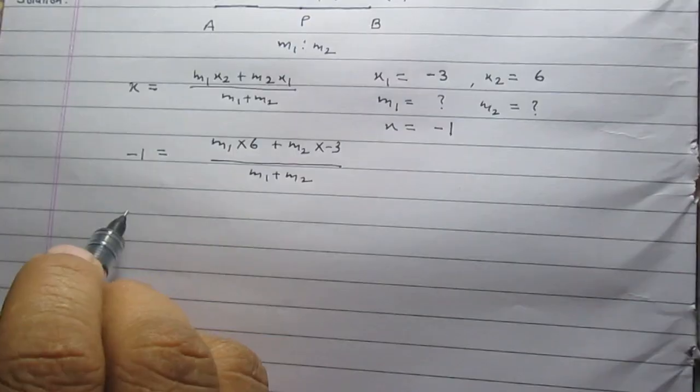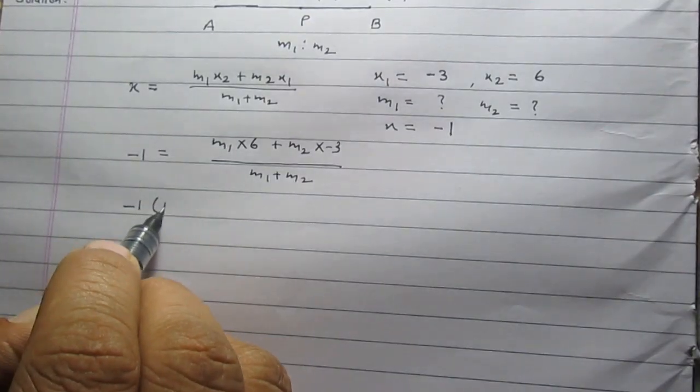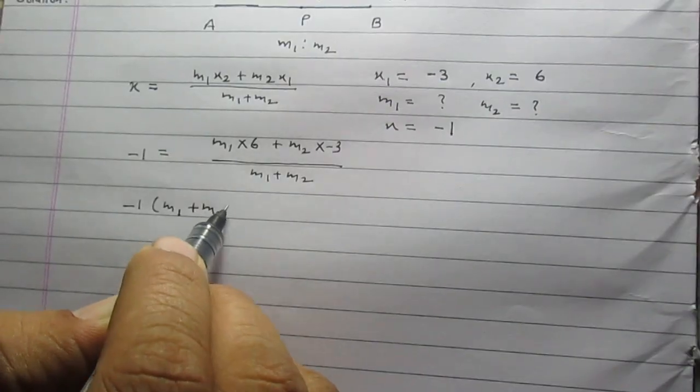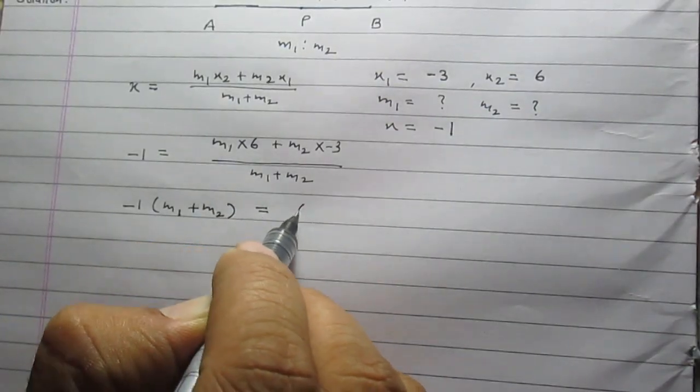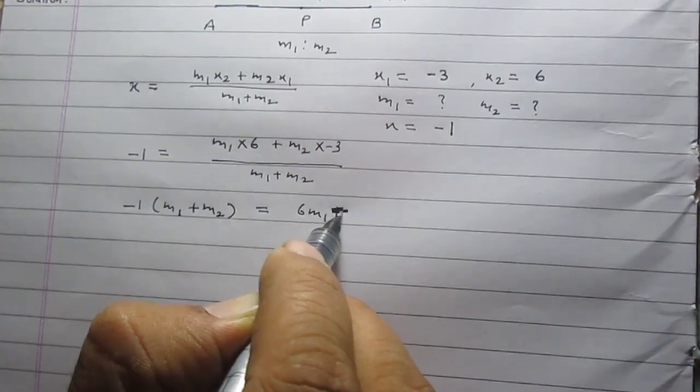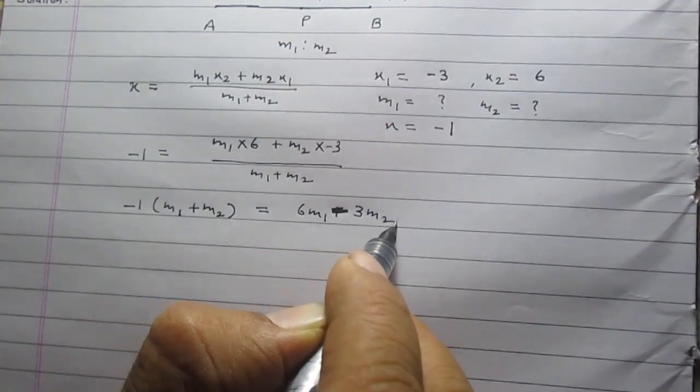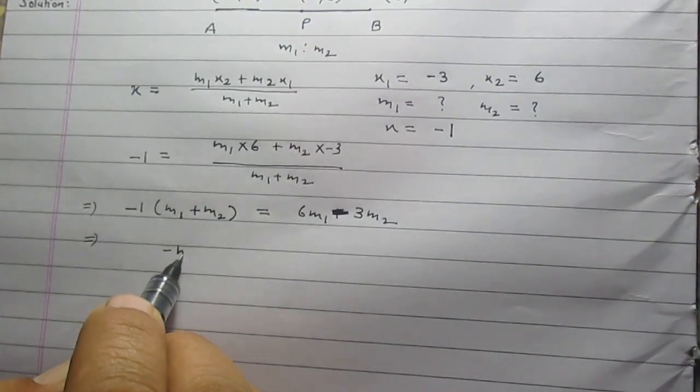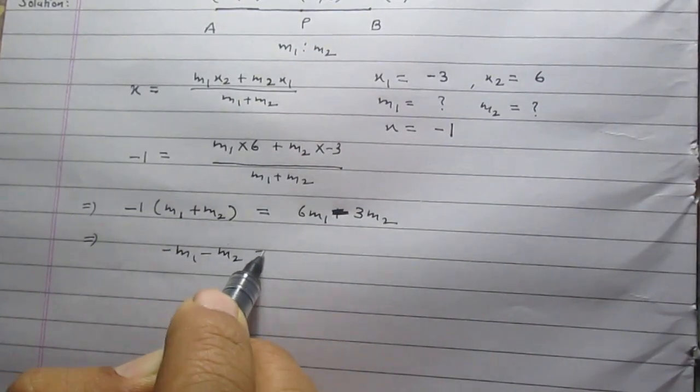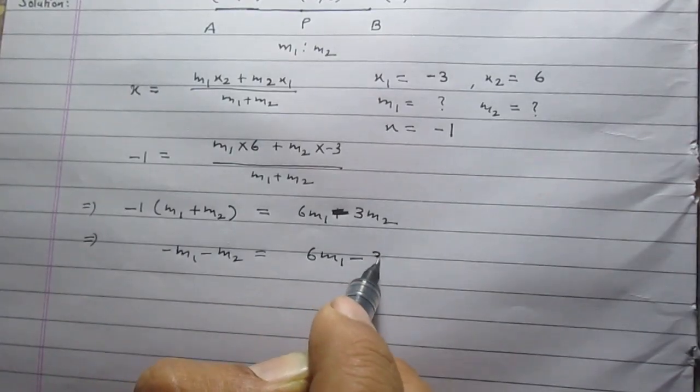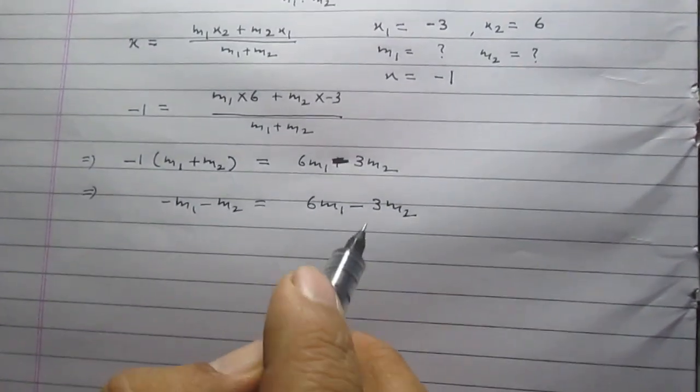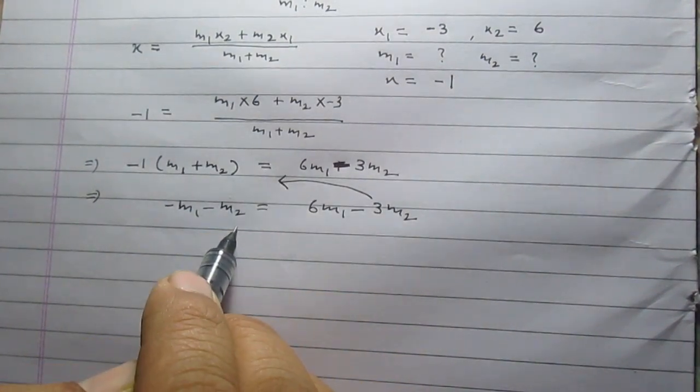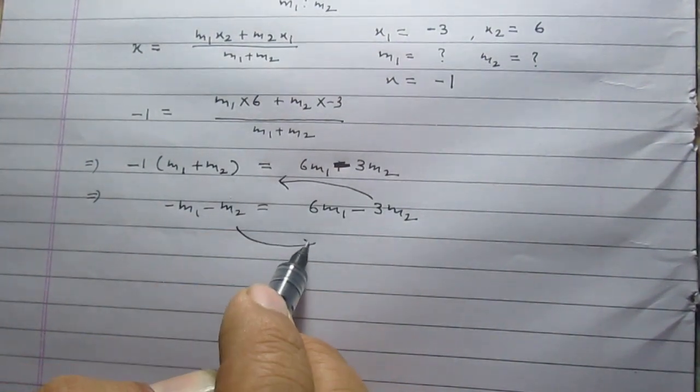After cross multiplication, -1(m₁ + m₂) = 6m₁ - 3m₂, which gives -m₁ - m₂ = 6m₁ - 3m₂. After transposing values from left to right and right to left, we will get...